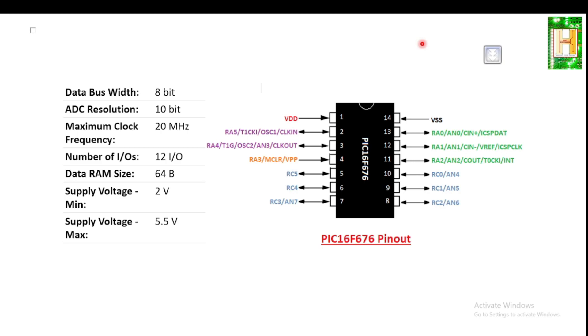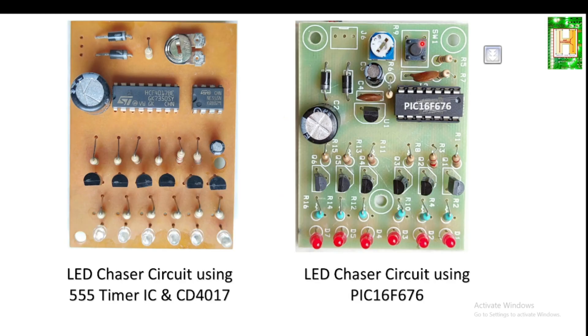It has an analog to digital converter with a resolution of 10-bit, a maximum clock frequency of 20 megahertz, 12 I/Os, data RAM size of 64-bit, and operates on voltage between 2 to 5.5 volts. This is a general specification about this microcontroller.